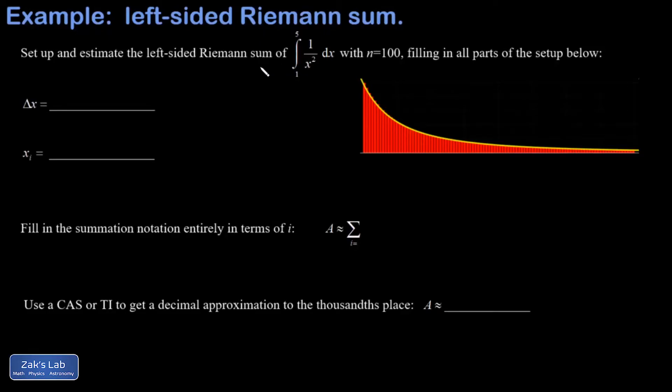In this problem, we're asked to set up the left-sided Riemann sum for this integral from 1 to 5 of 1 over x squared dx with 100 slices.